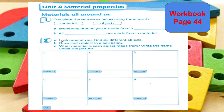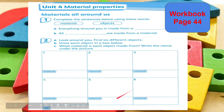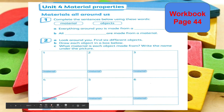For number 2, letter A, you look around and find 6 different objects. Draw each object in a box below. Then write what material each object is made from, and write the name under the picture. You draw one of the objects you've seen inside your house — you don't need to go outside. Everything inside your house, you can identify what material each object is made from.